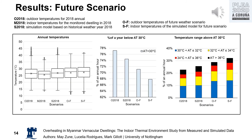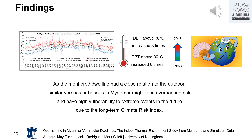When we compare the simulation results for different weather scenarios, the percentage of annual hours above air temperature 30 degrees Celsius will increase in future weather scenarios. We found that 32.2% of annual hours were above air temperature 30 degrees Celsius in the simulation under future weather scenarios.